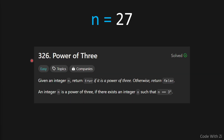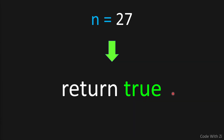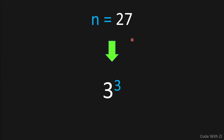This is LeetCode 326 - Power of Three. It asks us: given an integer n, return true if it is a power of three, otherwise return false. An integer n is a power of three if there exists an integer x such that n equals three to the power of x — x being a valid number like five, six, or seven.